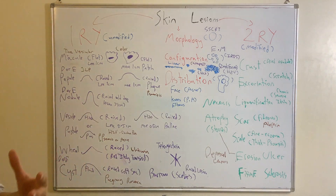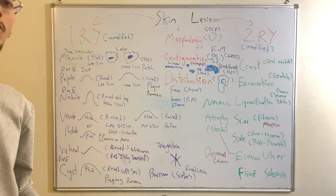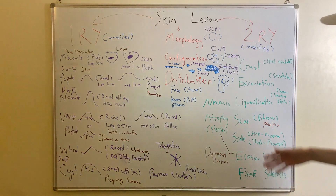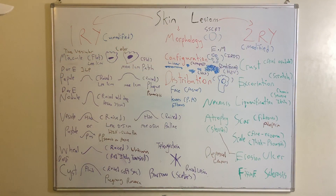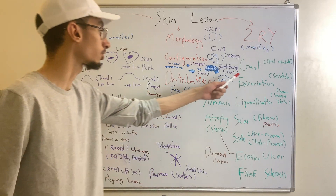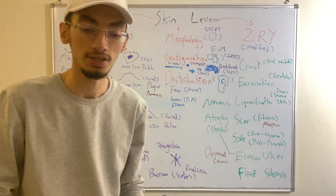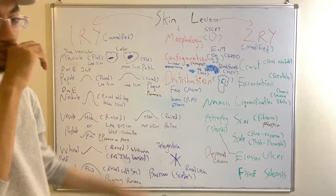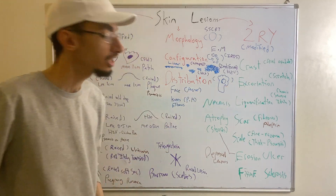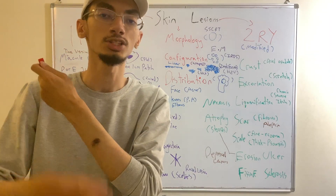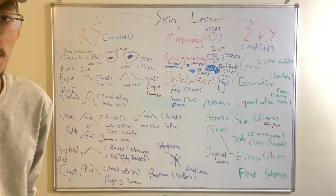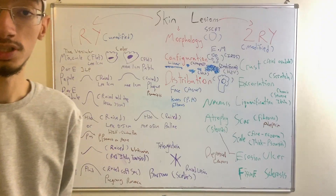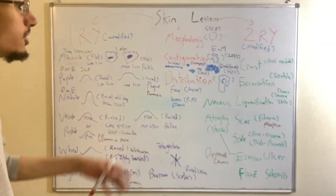Now for secondary skin lesions — the modified ones. A crust is dried exudate from a ruptured vesicle — the fluid-filled sac ruptures and the fluid dries to form a crusty layer. Excoriation occurs when a person constantly scratches, leaving a linear mark on the skin that can be hemorrhagic. It is essentially a linear scratch mark or superficial skin damage resulting from repeated scratching.